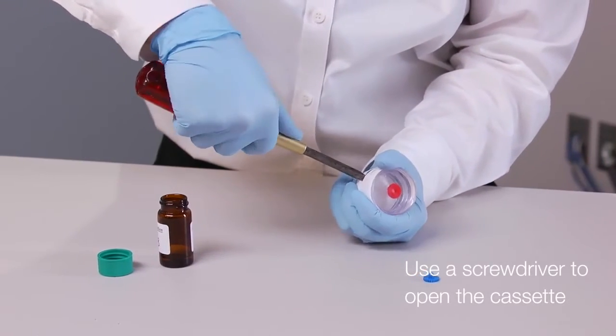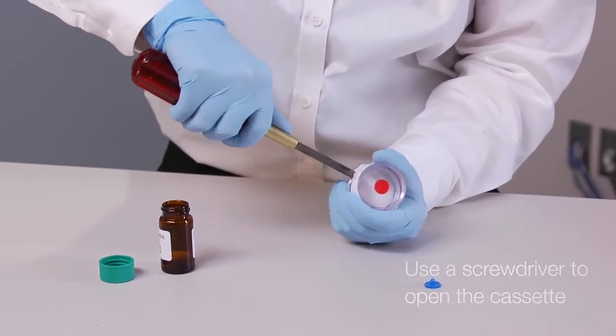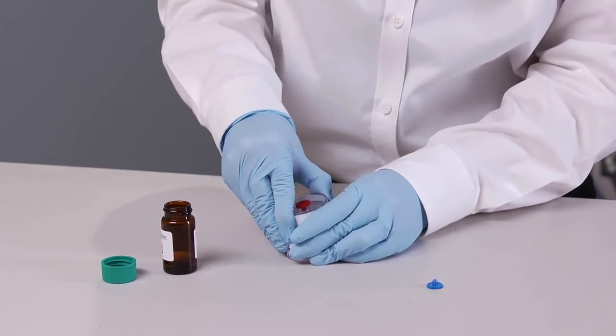Using a screwdriver or a coin, open the plastic cassette and separate the bottom piece that contains the filter and support pad.